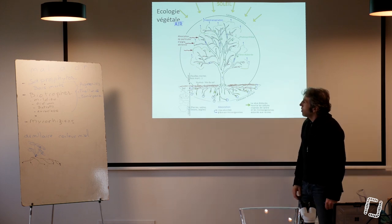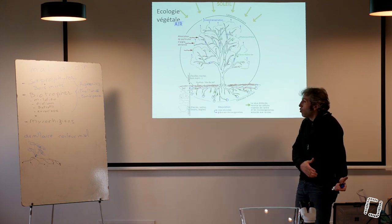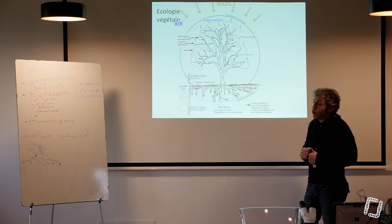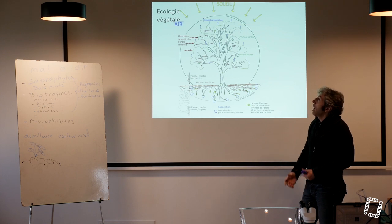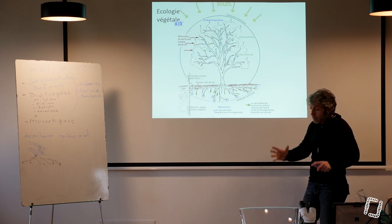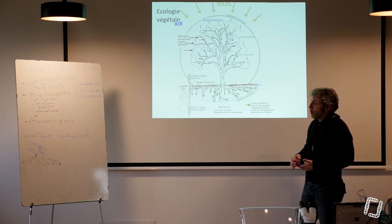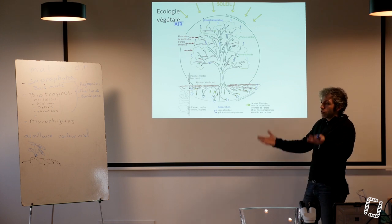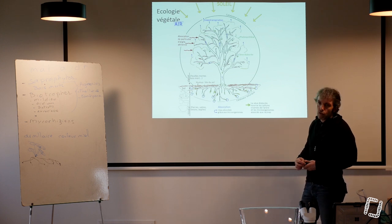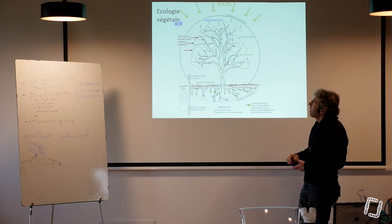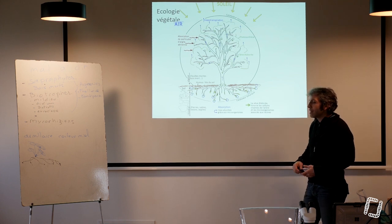Dans les racines, elle va se comporter comme une sève dite brute - de l'eau et des sels minéraux et des acides humiques - qui vont monter dans la plante par le bois, arriver jusqu'au niveau du feuillage par un phénomène de suction qui est l'évapotranspiration. Ces minéraux vont rester dans la feuille malgré l'évapotranspiration. L'eau va s'évaporer, les minéraux vont rester dans la feuille et la feuille va fabriquer, grâce à la photosynthèse, de la sève élaborée.